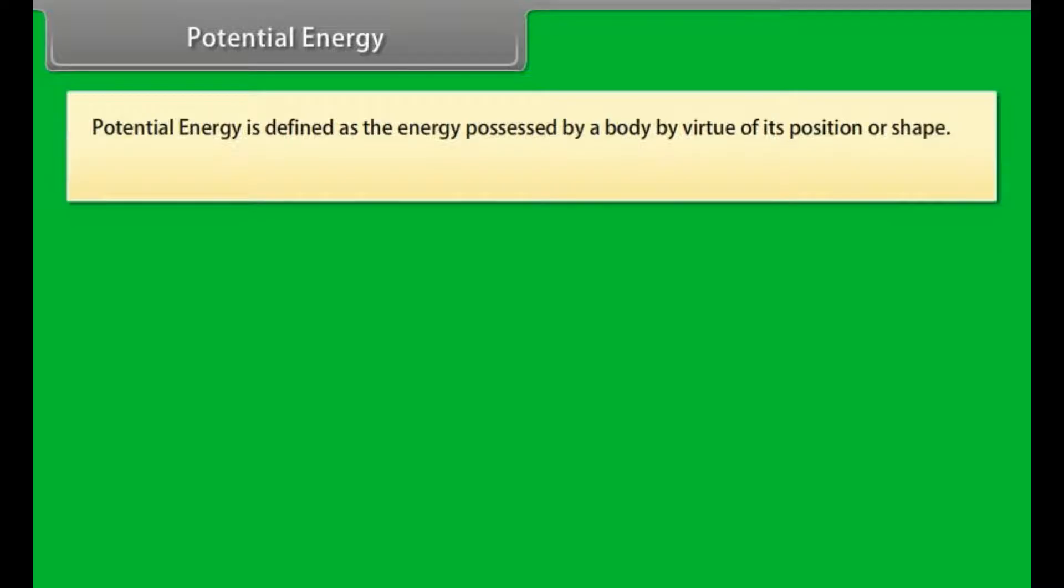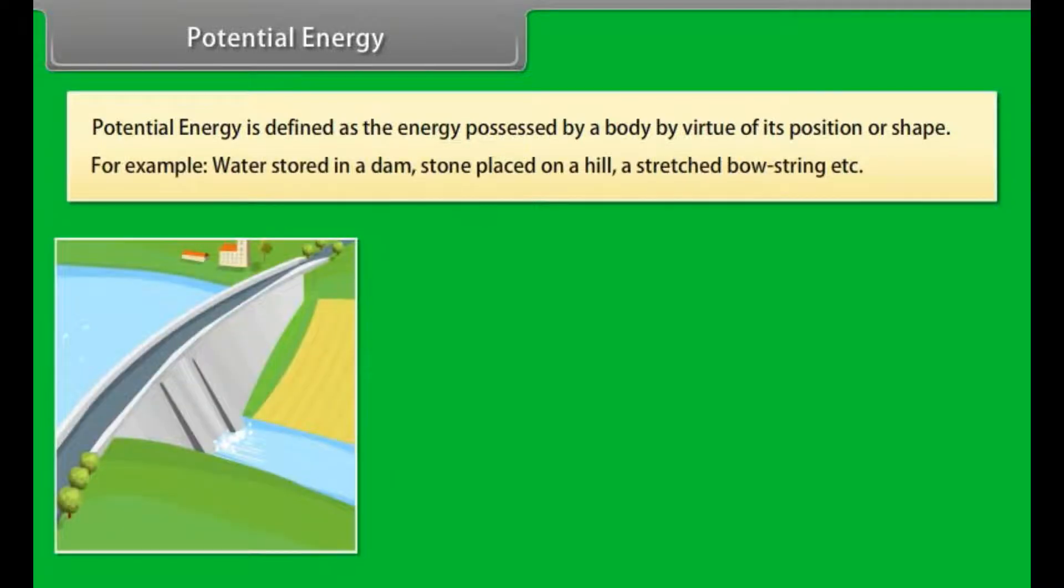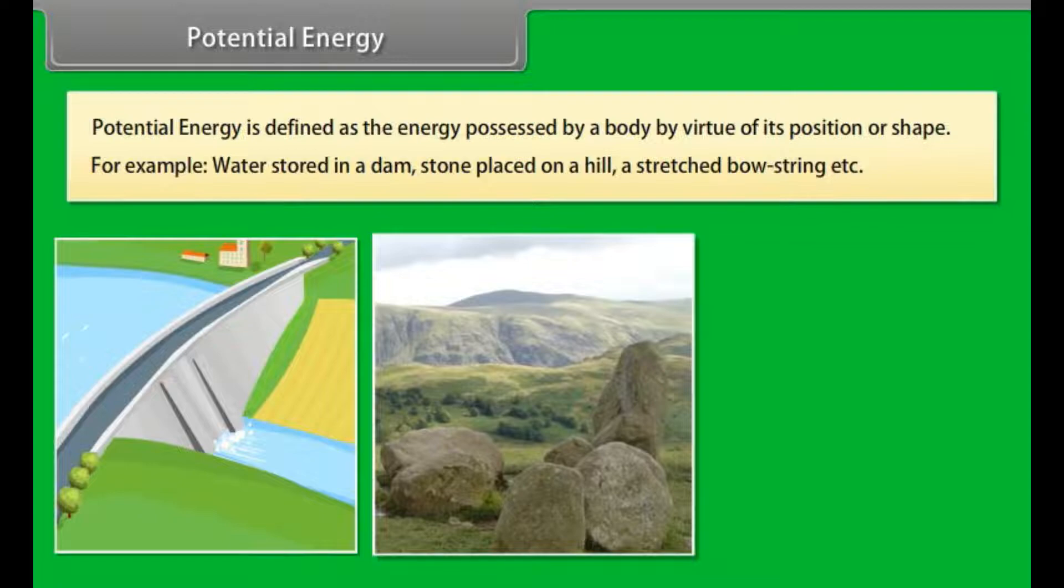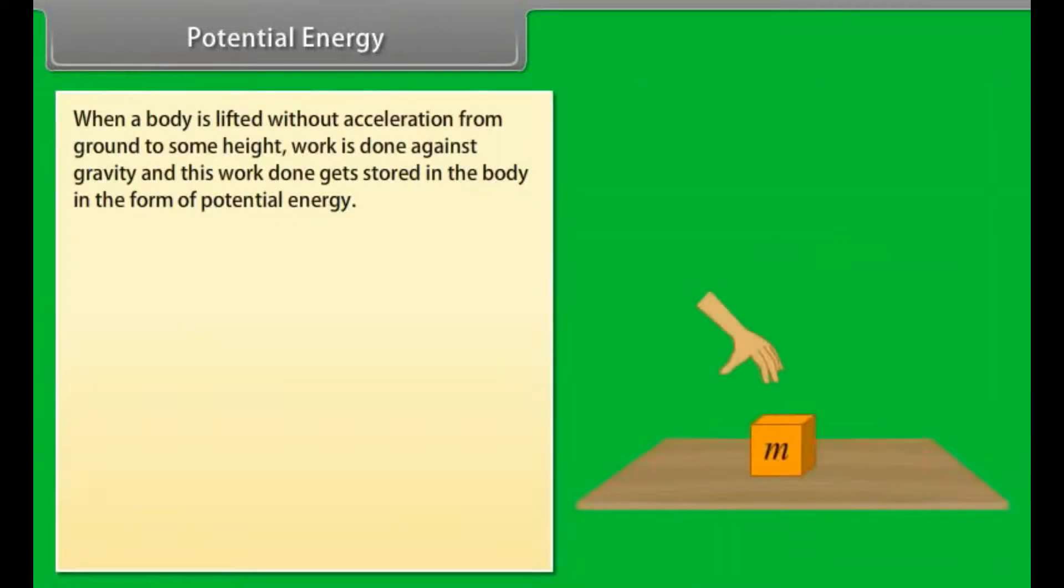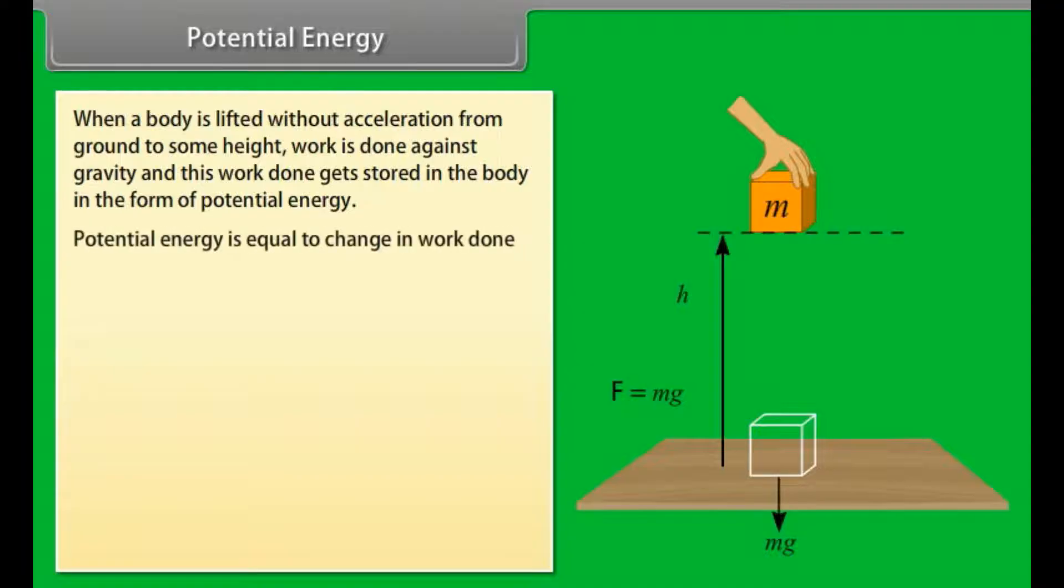Potential energy. Potential energy is defined as the energy possessed by a body by virtue of its position or shape. For example, water stored in a dam, stone placed on a hill, a stretched bow string, etc. When a body is lifted without acceleration from ground to some height, work is done against gravity and this work done gets stored in the body in the form of potential energy.